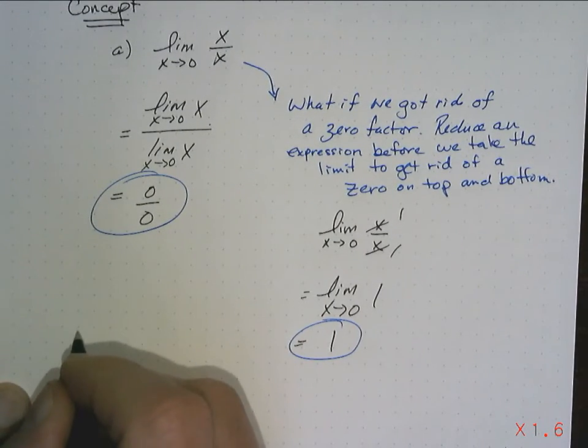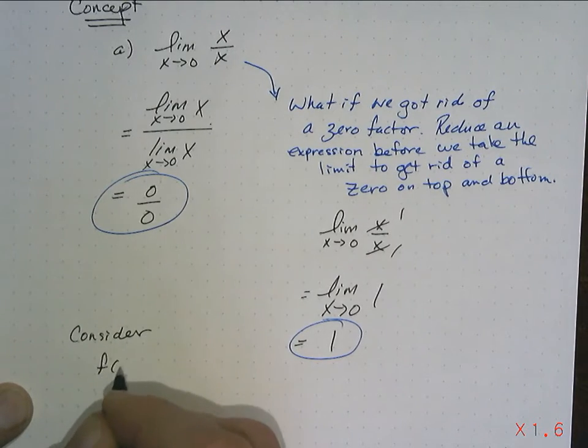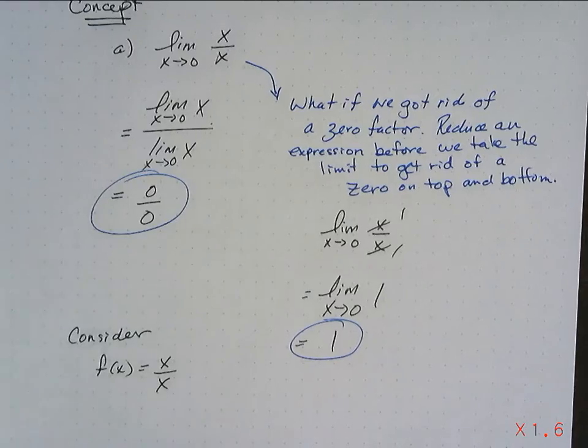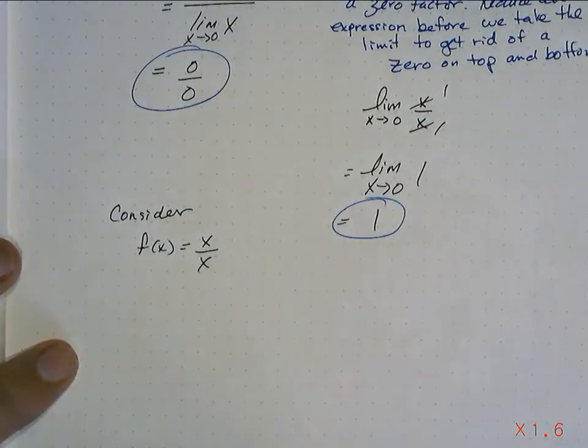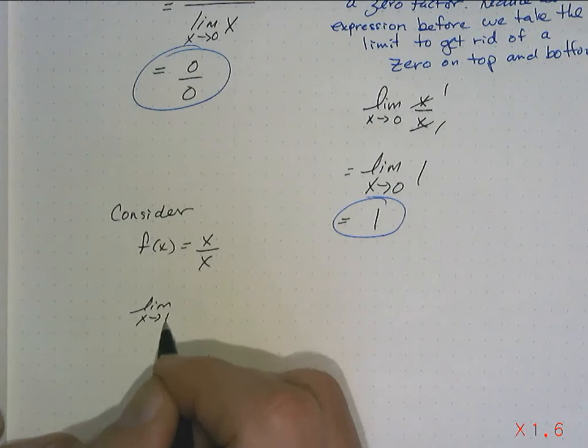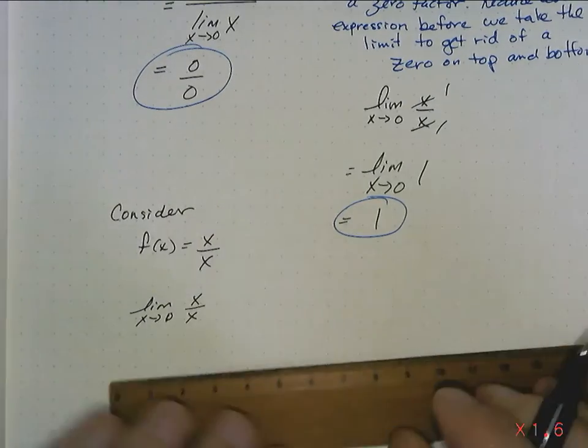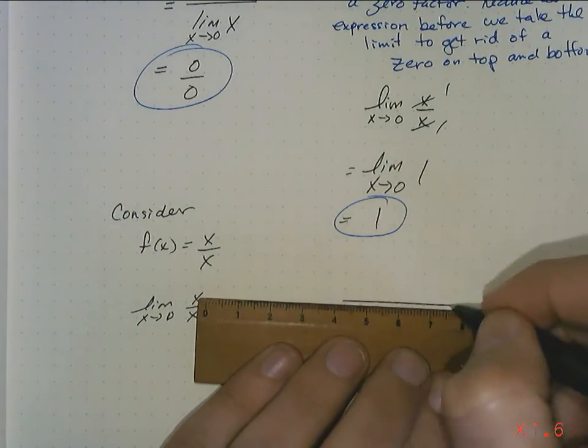Well, let's think about the graph. So let's consider the graph of f of x equals x over x. And let's consider the limit as x approaches, not 1, 0, of x over x or f of x.